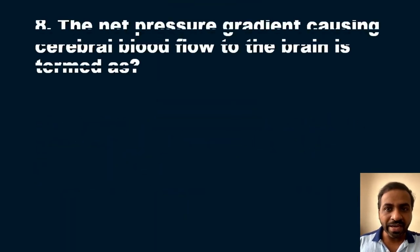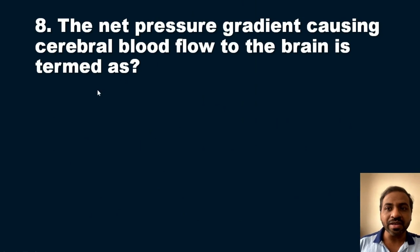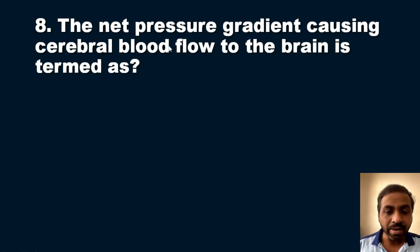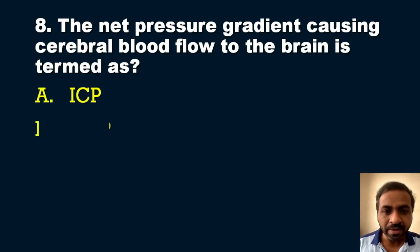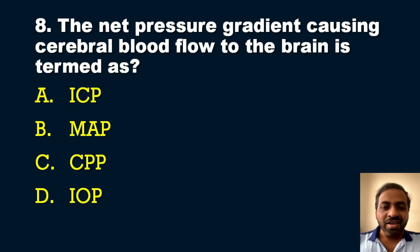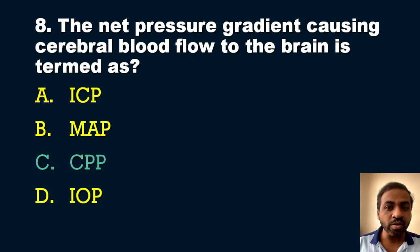The eighth question, from the central nervous system: the net pressure gradient causing cerebral blood flow to the brain is termed as? Options: A) ICP, B) MAP, C) CPP, D) IOP. The answer is option C — CPP, or cerebral perfusion pressure. It is the net pressure gradient causing cerebral blood flow to the brain.